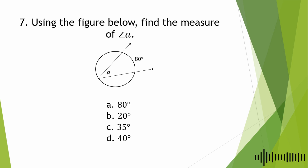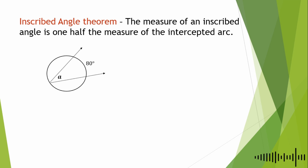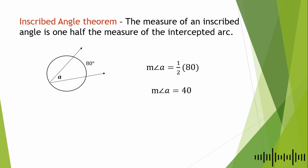Seventh question: using the figure below, find the measure of Angle A. A. 80°, B. 20°, C. 35°, D. 40°. We use the inscribed angle theorem: the measure of an inscribed angle is one half the measure of the intercepted arc. So the measure of Angle A = ½ × 80 = 40°. The answer is letter D.